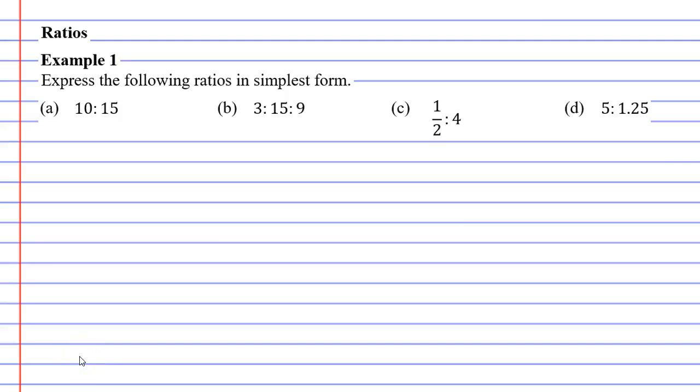In this video, we're going to complete example 1, and we're going to express the following ratios in simplest form. When we do this, we're trying to make the numbers as small as possible without making them into fractions or decimals. So we'll start with the ratio 10 to 15. Remember that the golden rule is to divide or multiply both sides of the ratio by the same number.